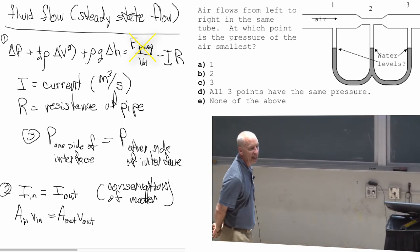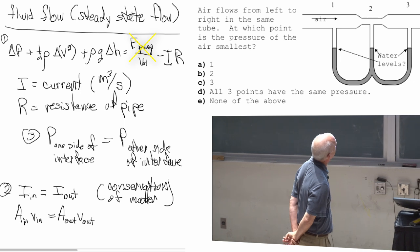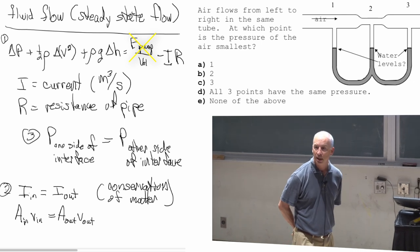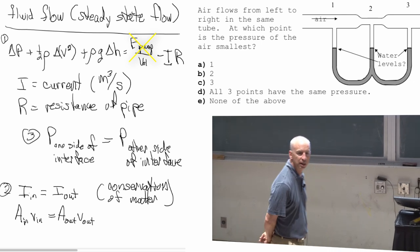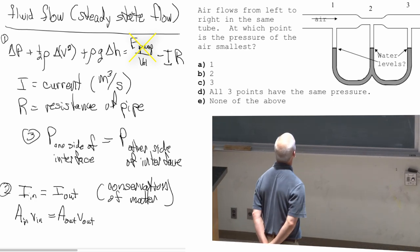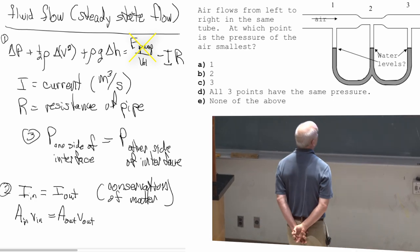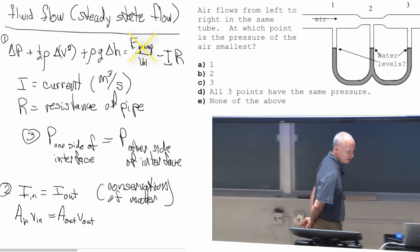You know the kinetic energy goes up as you go from one to two, and then back down again as you go from two to three, because two has the highest speed. And gravitational potential energy you have to answer on your own.